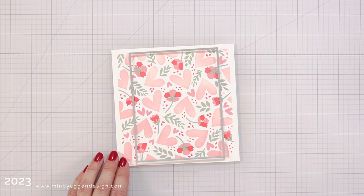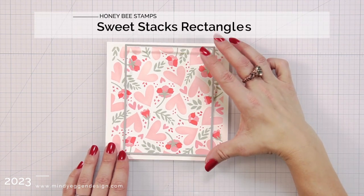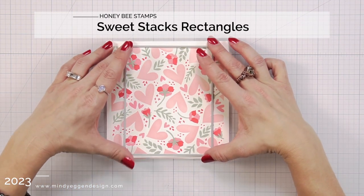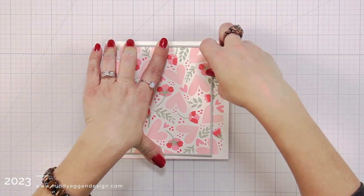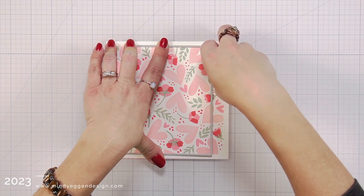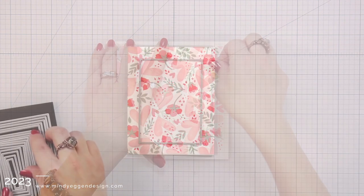So at this point, I really wasn't exactly sure what I was going to do for a card design, but I started with die cutting out my panel using the rectangle sweet stacks. And this is the largest one out of that bunch. This is going to cut it to four and a quarter by five and a half.